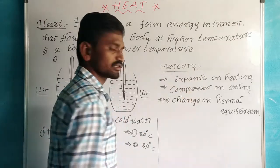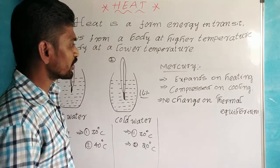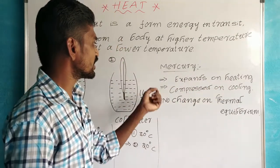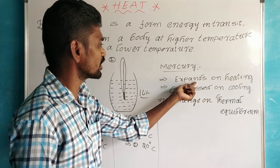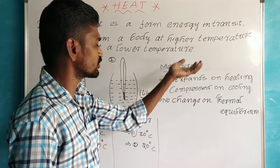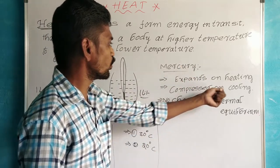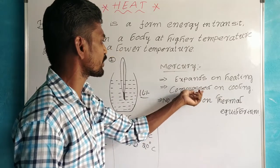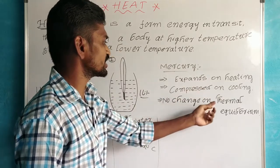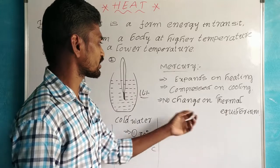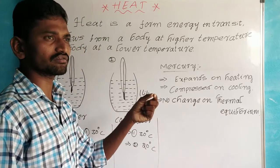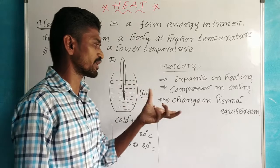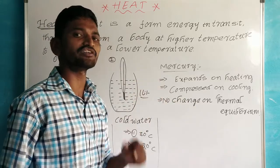First, to check the temperature, mercury expands on heating. When you heat the temperature, the mercury level rises. There is a change when the thermometer is in thermal contact. We compare the thermometer readings to the surrounding medium at the same temperature. The mercury level changes.